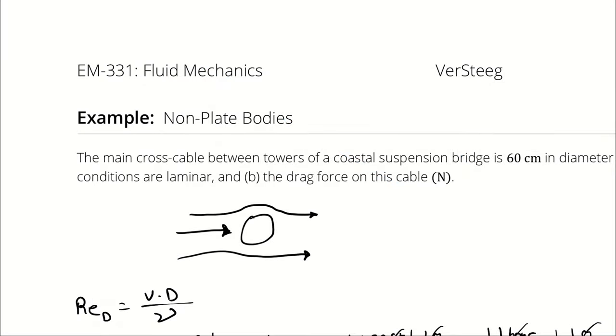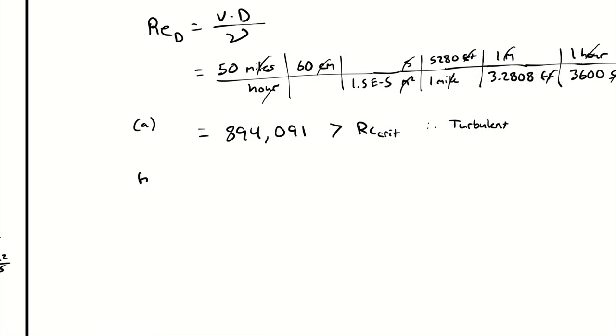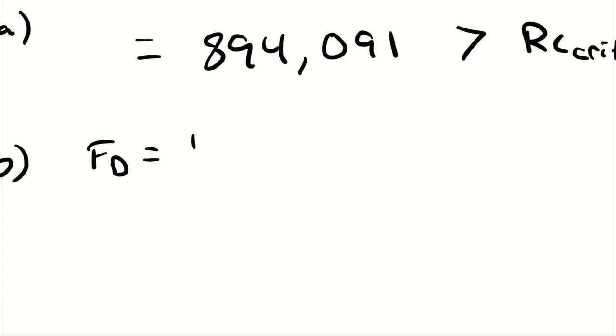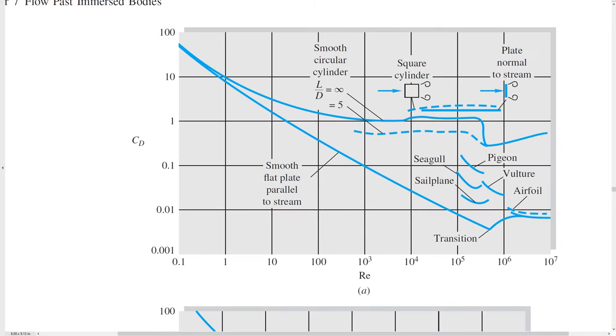Now on to part B. For part B, I want us to determine the drag force, which is going to be one-half times the coefficient of drag times the density times the area times velocity squared. The coefficient of drag will come from this figure. Again, we're assuming a smooth circular cylinder, and we're saying that the length is so much longer than the diameter that it is essentially an infinite relation. It's very long relative to its diameter.